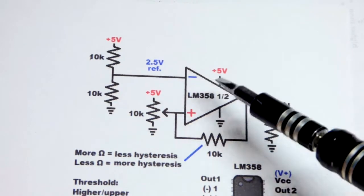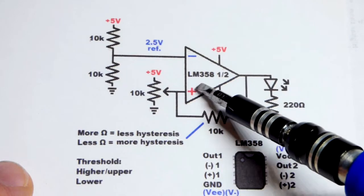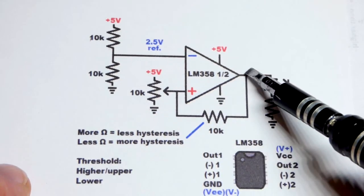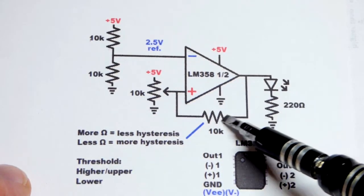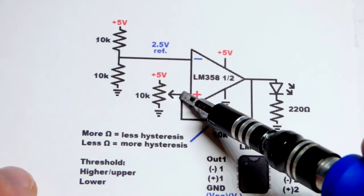Remember, these inputs don't let current in or out. They just look at the voltage being applied to them. Then we had our trim pot to the non-inverting input. And it was influenced, the voltage, by this resistance coming from the output. The output helped change its resistance.